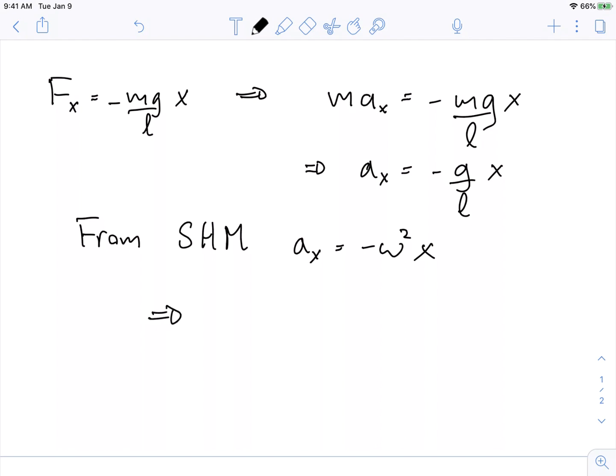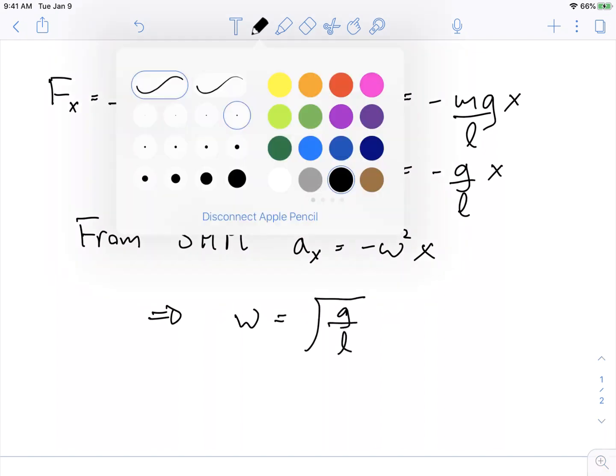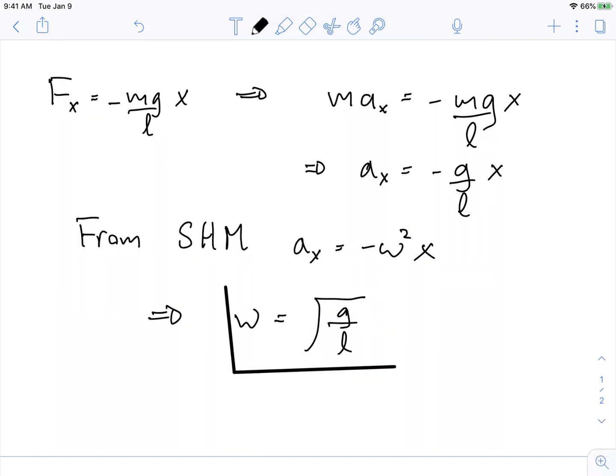And so this implies that omega is equal to the square root of g over L for these pendulum systems. So this is how to attach the physics of the pendulum to simple harmonic motion.